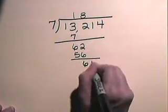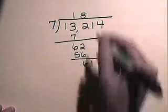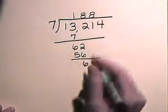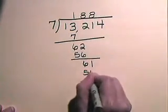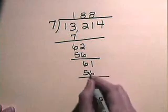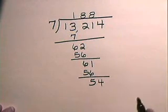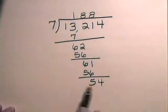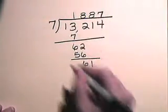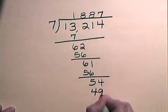We bring down the 1. 7 divides into 61 eight times. 8 times 7 is 56, and we subtract, leaving us with a 5. We bring down our last digit, which is a 4. 7 divides into 54 seven times.